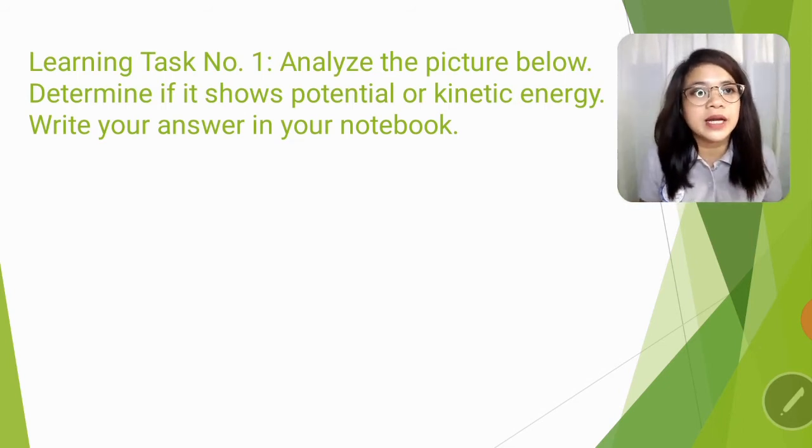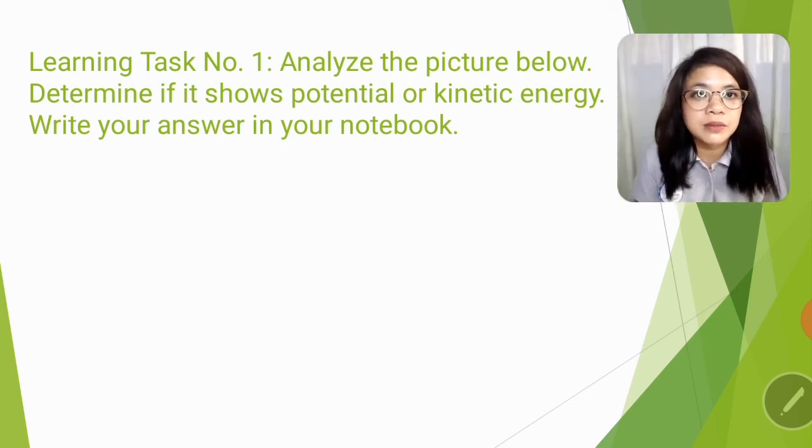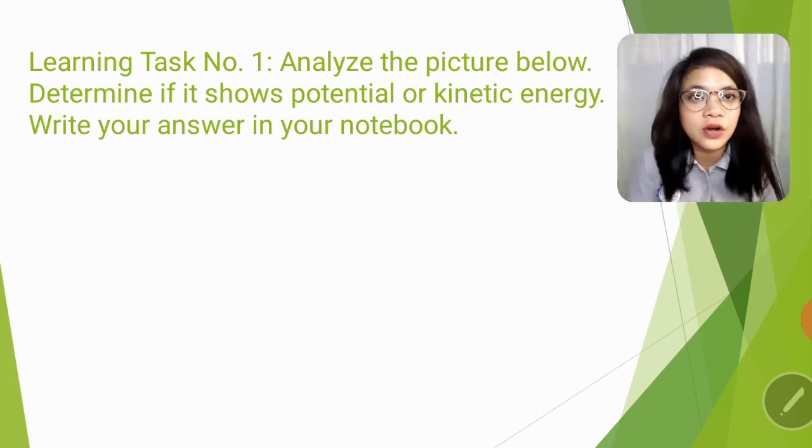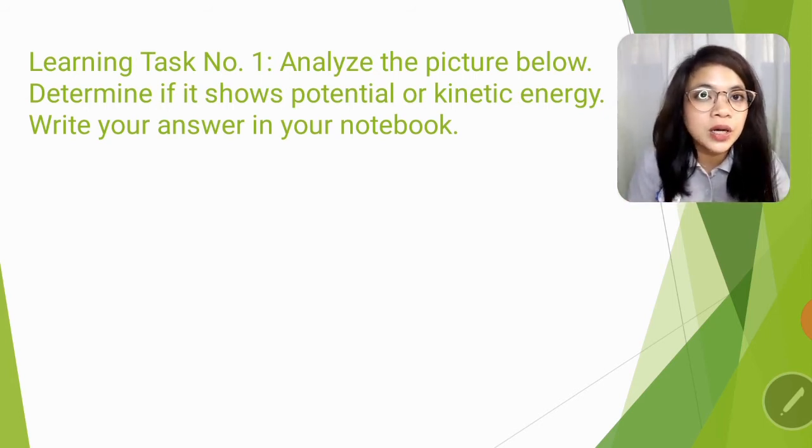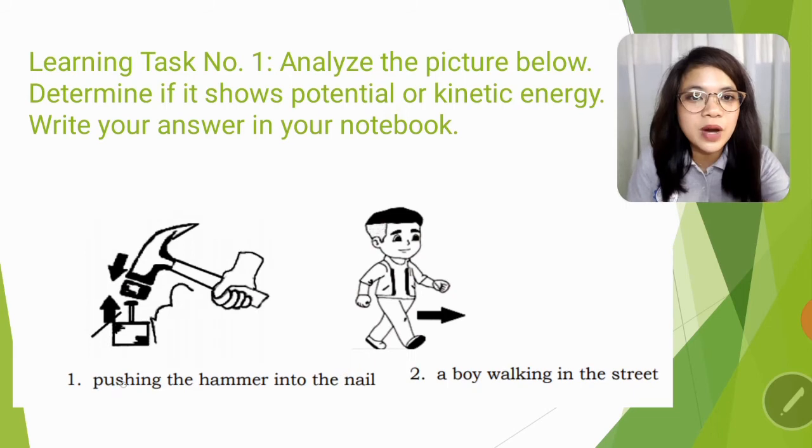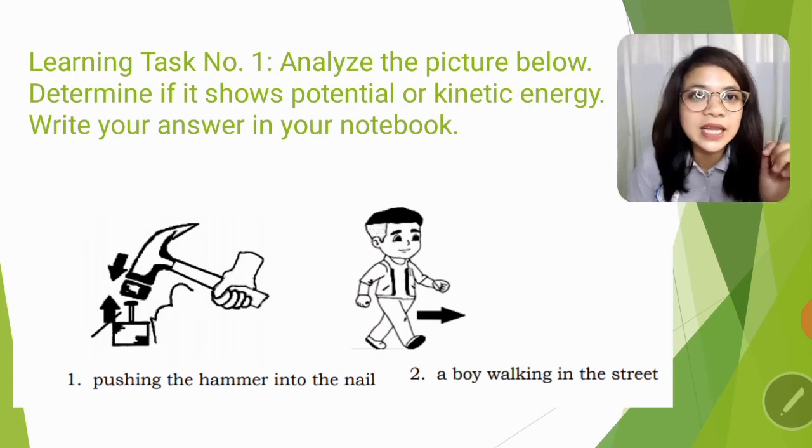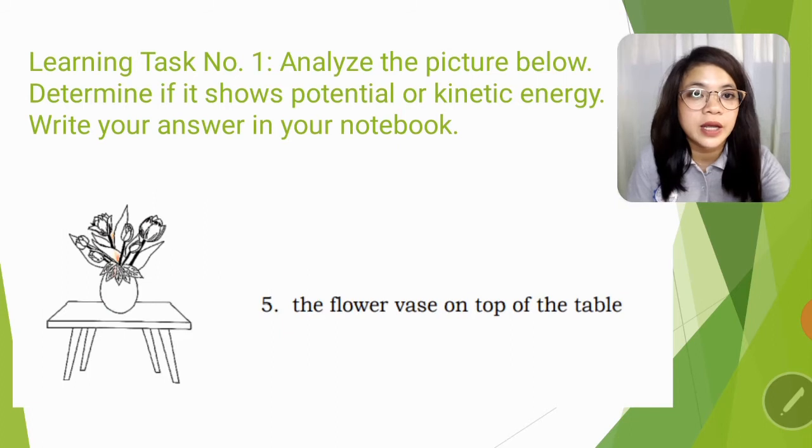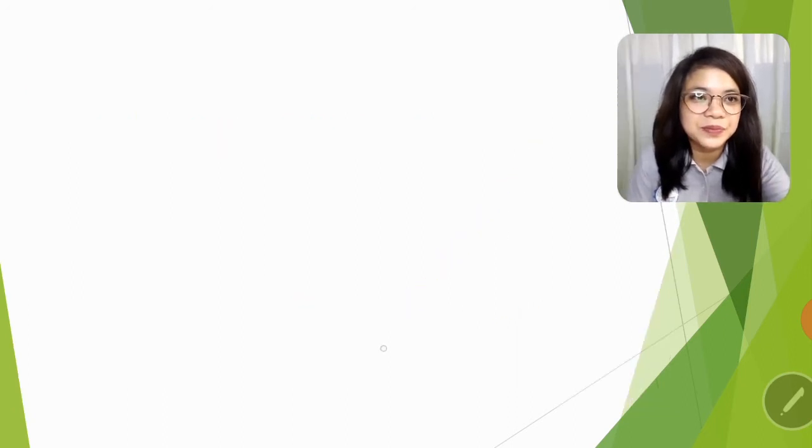On the learning task number one, analyze the picture below, determine if it shows potential or kinetic energy, write your answer in your notebook. So kailangan nyo lamang i-analyze isa-isa yung mga picture na nakalagay sa module ninyo for learning task number one. And you're going to determine if it shows potential or kinetic energy. So that is number one, pushing the hammer into the nail. Number two, a boy walking in the street. Is that potential or kinetic energy? Just write it on your piece of paper. Then the man holds the bow and arrow. Number four, the arrow approaching the dart board. Number five, the flower vase on top of the table. Is that potential or kinetic energy?